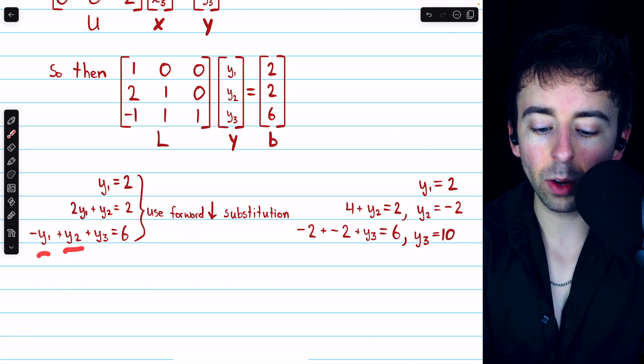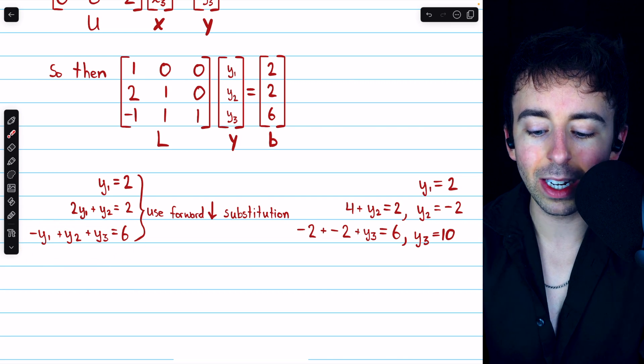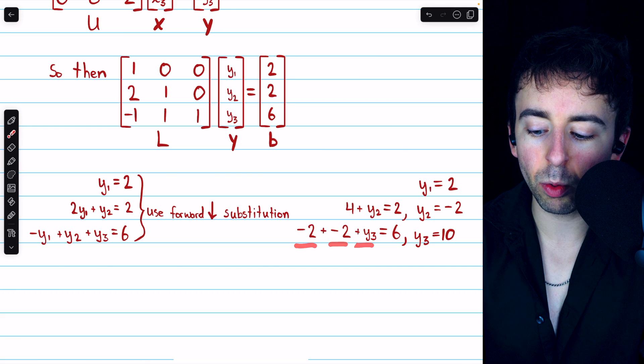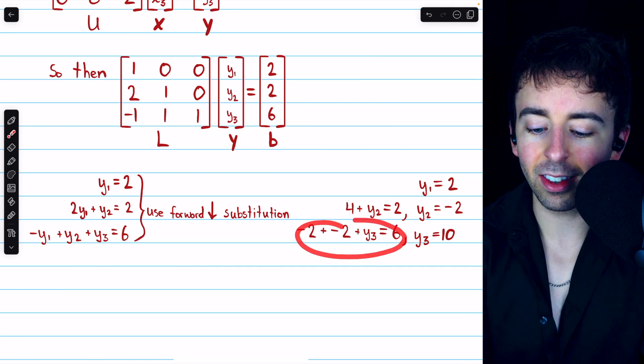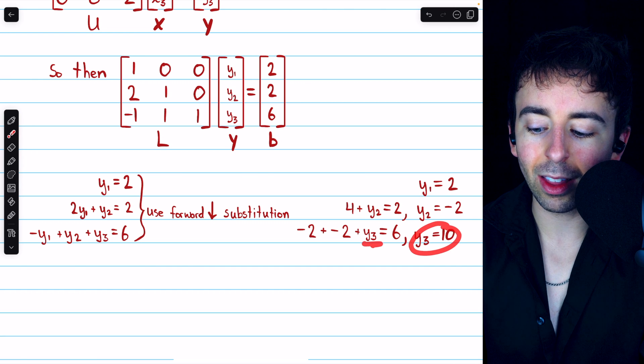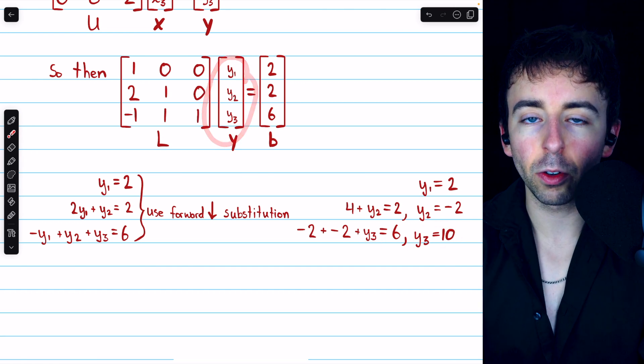Now that we know Y2 and Y1, we can plug those into the third equation and solve for Y3. That gives us negative 2 plus negative 2 plus Y3 equals 6, again this comes from row 3 there, and solving this for Y3, we get that Y3 equals 10. Thus, we've solved for this new variable vector Y.